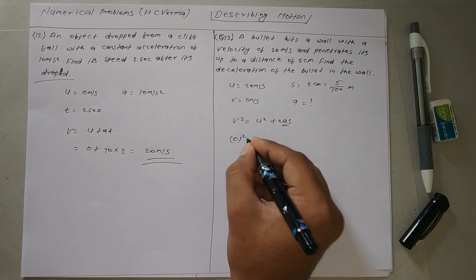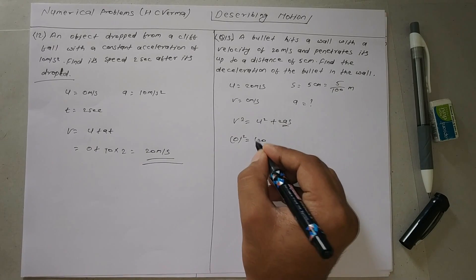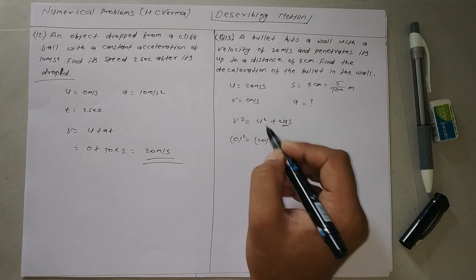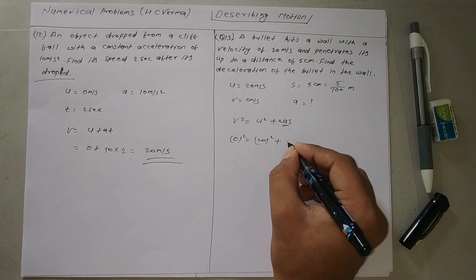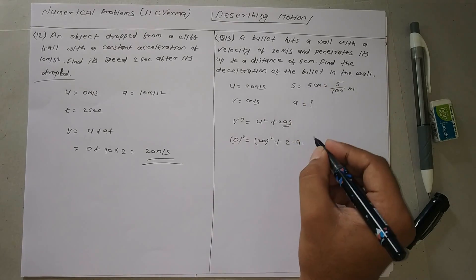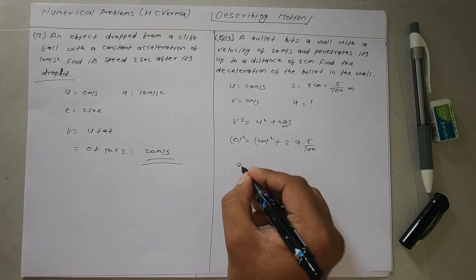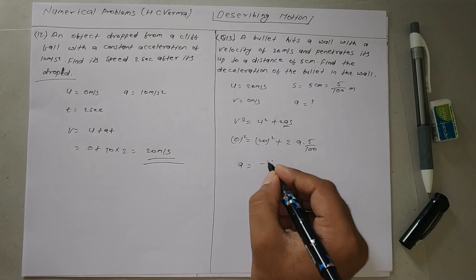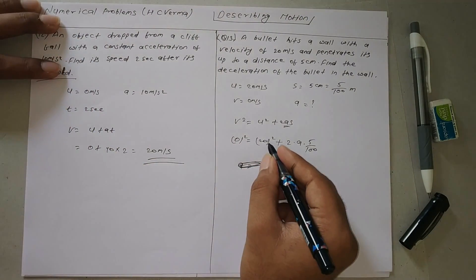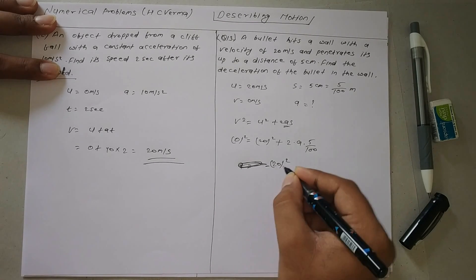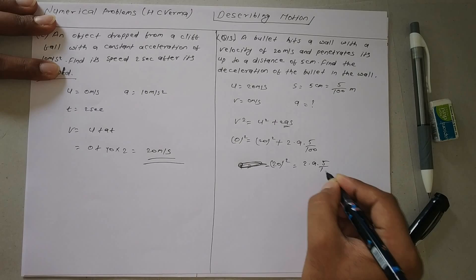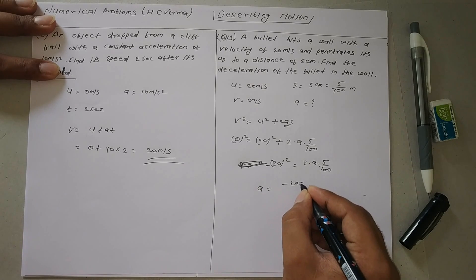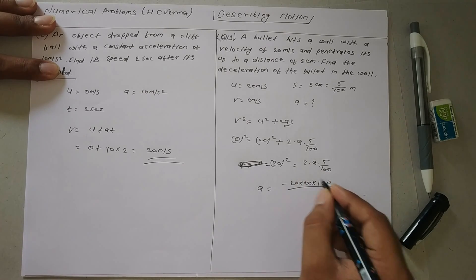Substituting: v is 0, u is 20 meters per second, s is 5 by 100. So 0 equals 20 squared plus 2 times a times 5 by 100. Rearranging, minus 20 squared equals 2 times a times 5 by 100. So a equals minus 20 squared times 100 divided by 2 times 5. This gives acceleration equals minus 4000 meters per second squared. Since the acceleration is negative, it is deceleration: 4000 meters per second squared.